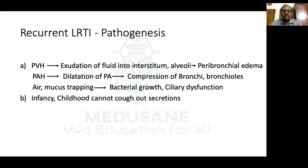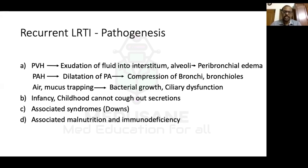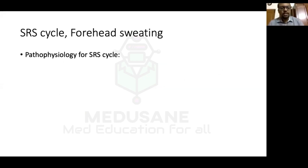Additional contributors to recurrent pneumonia include: infants' poor cough ability, associated syndromes like Down syndrome with immunodeficiency and upper airway problems, malnutrition-associated immunodeficiency in large shunt lesion babies, and gastroesophageal reflux disease common in small infants. All these factors together cause recurrent respiratory tract infections in large shunt lesions.